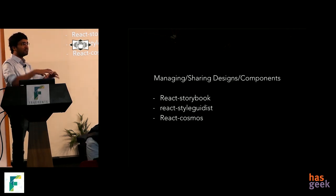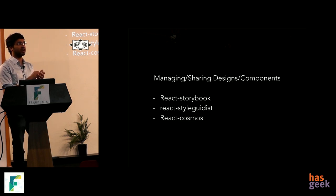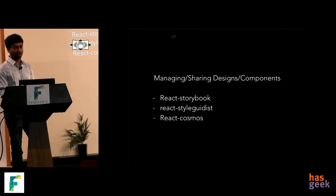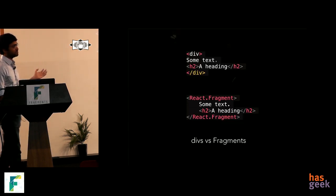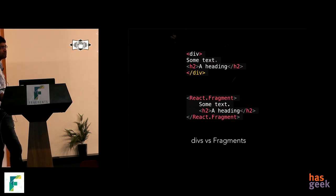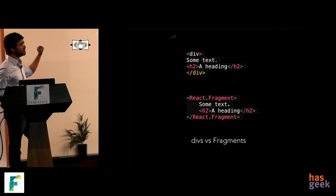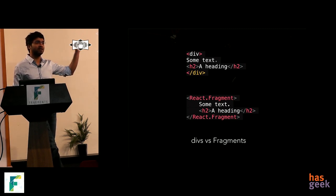When working with a big team and you have components like styled buttons that you want to share, you can now use tools like Storybook, Styleguidist, or React Cosmos. In other recent changes: initially every React component needed to be wrapped in one element, so you would just wrap things in a div. Now you can use React Fragments to get rid of those unnecessary wrapper divs.